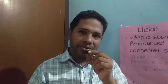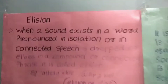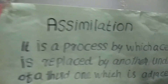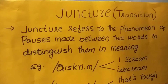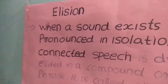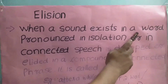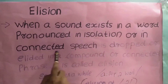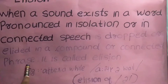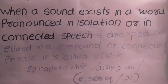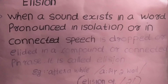Welcome to our phonetics class. Today let us talk about elision, assimilation, and juncture. First of all, we have to talk about elision. What is elision? When a sound exists in a word pronounced in isolation or in connected speech is dropped or elided in a compound or connected phrase, it is called elision.